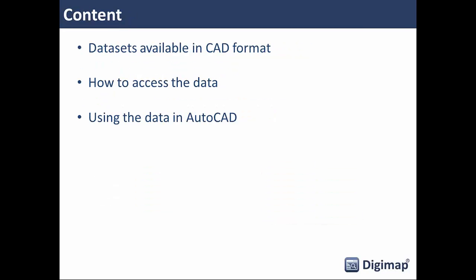We're going to cover three things today: which datasets are available in CAD format in Digimap, how to access and download that data through the service, and how to use that data in some of the different AutoCAD products.